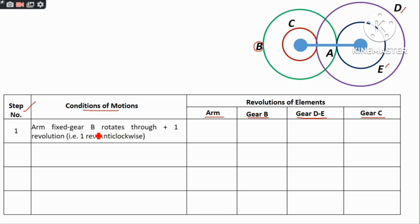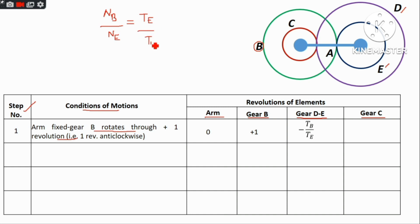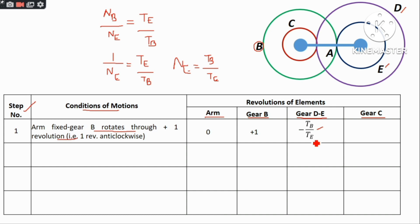We have input gear B given plus one revolution. Gear ratio: NB divided by NE equals TE divided by TB, since B is the driver and E is the driven gear. So NB divided by NE equals TE by TB. This gives a minus sign, meaning E rotates anti-clockwise when B rotates clockwise. Similarly D, being on the same shaft as E, also rotates clockwise.